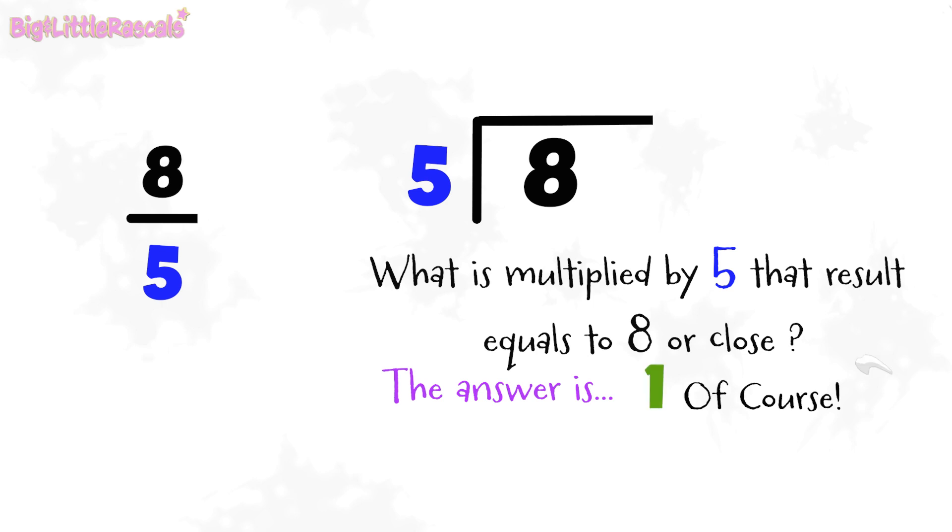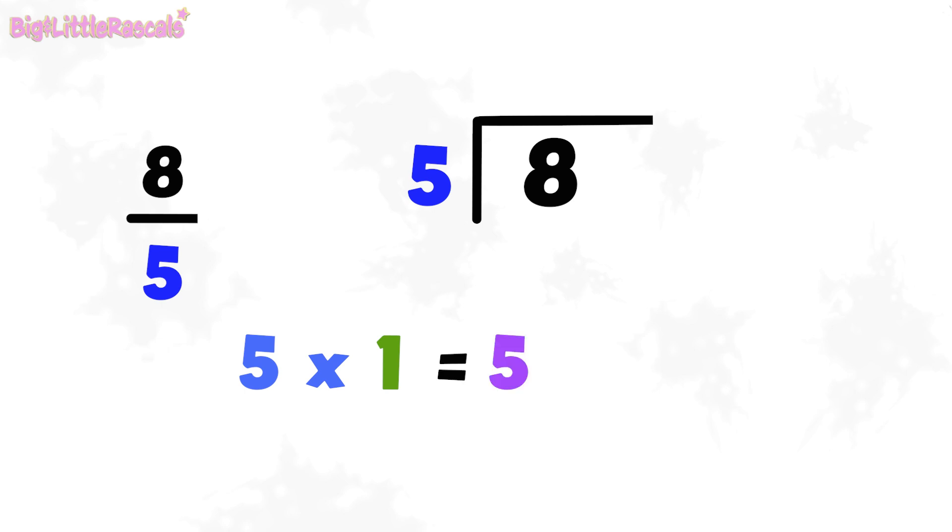The answer is one, of course. Well done! Five multiplied by one equals to five.